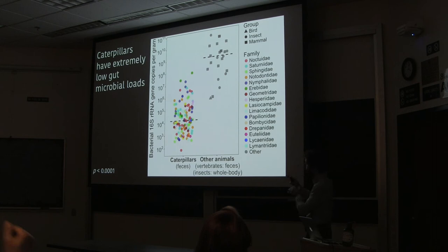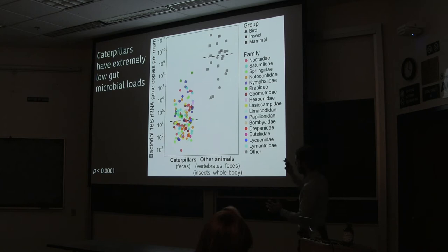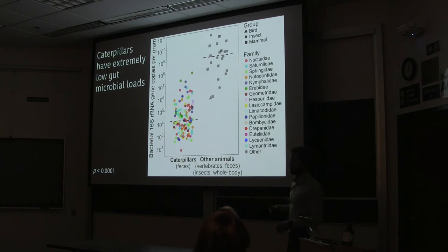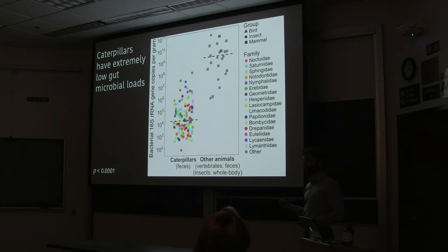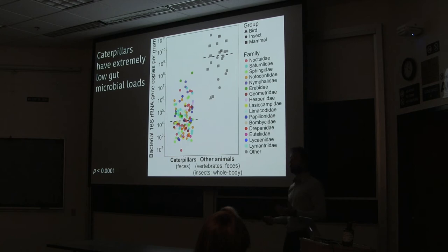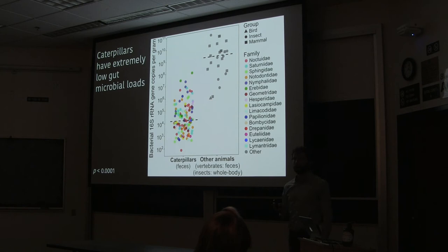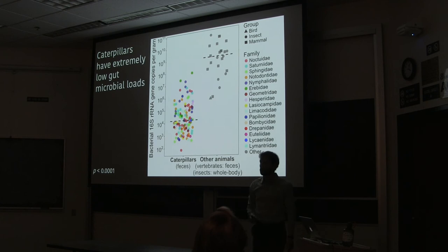Adding the caterpillars to the plot — colored by their 15 lepidopteran families — reveals a huge difference. The median for caterpillars is around 10 to the 4th power, while the median for those other groups is around 10 to the 9th — five orders of magnitude difference. There are just not a lot of bacteria in caterpillar guts. I also looked at fungi and found the same pattern. So it doesn't appear that caterpillars are missing bacteria but compensating with fungi — they just have very low microbe levels across the board.